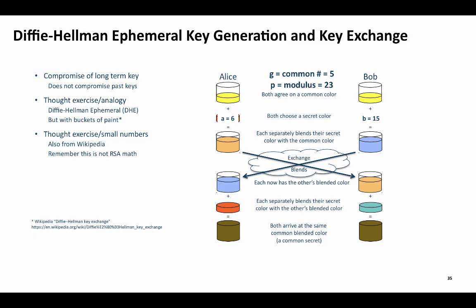Now they do their first set of math. Alice creates capital A by raising 5 to the 6th power to get 15,625, and takes the modulus 23 of that number to get 8, where 23 goes into 15,625, 679 times, with a remainder of 8. Similarly, Bob generates capital B by raising 5 to the 15th power, which is 30,517,578,125, and then takes the modulus 23 of that number to get 19.